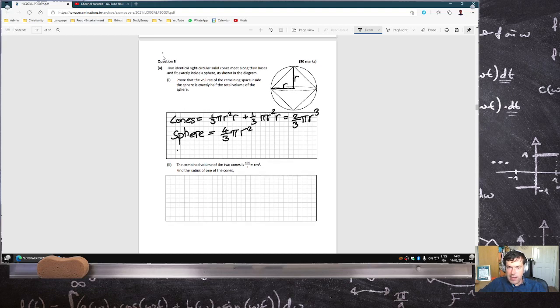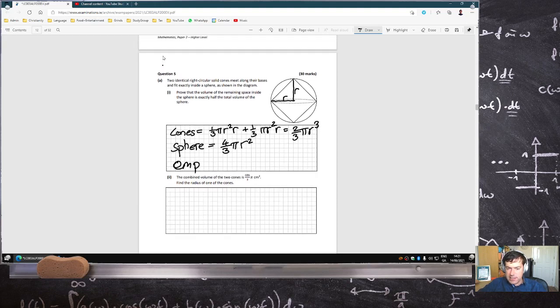So the empty space is the difference between the two, which would be two-thirds pi r cubed, which is half a sphere.